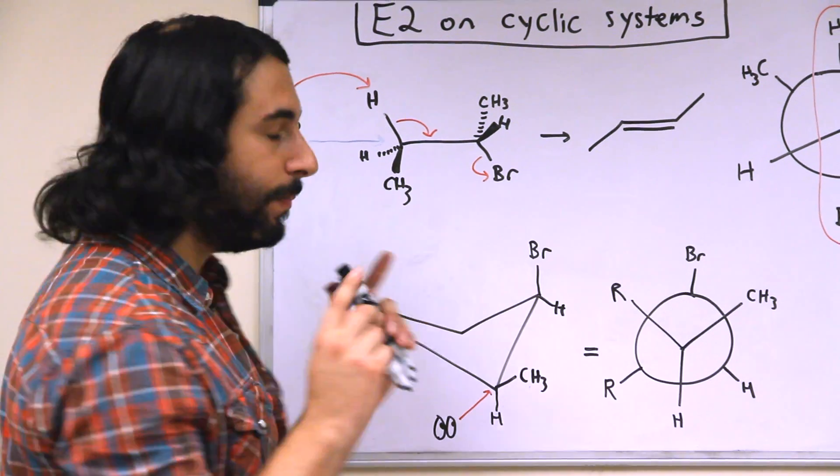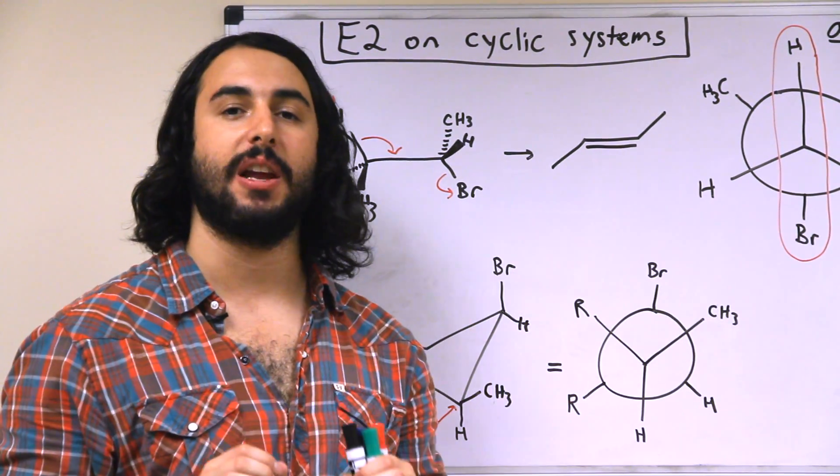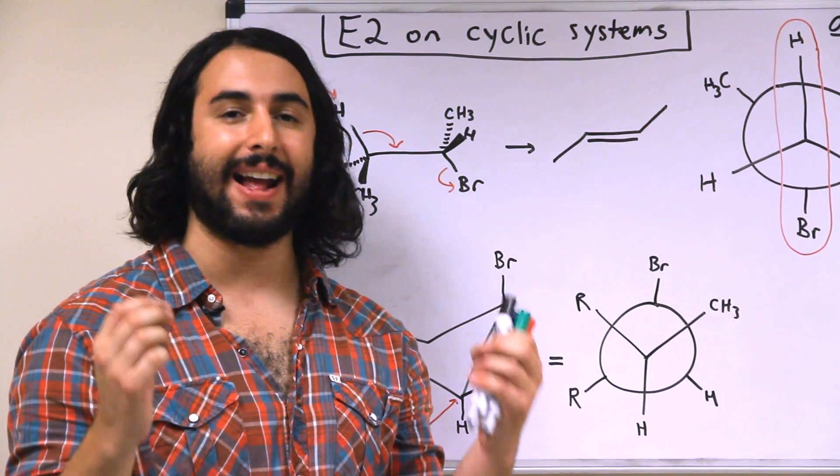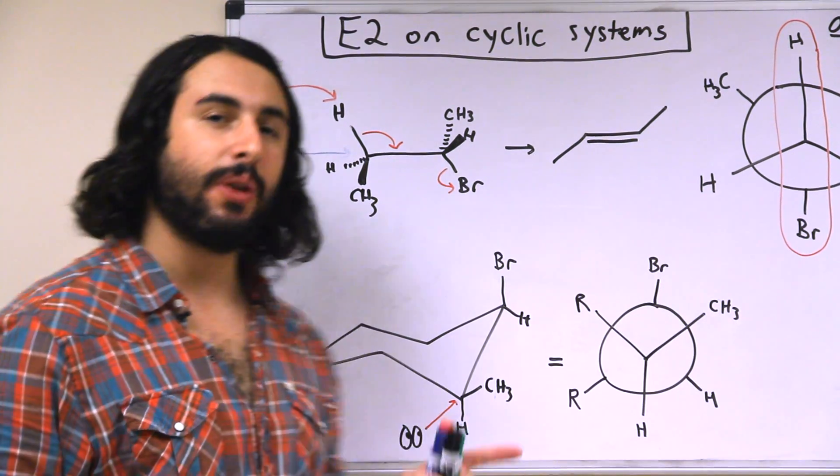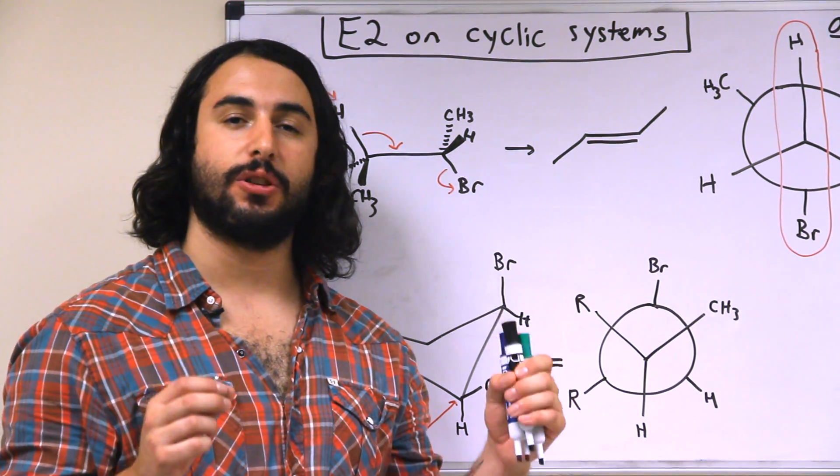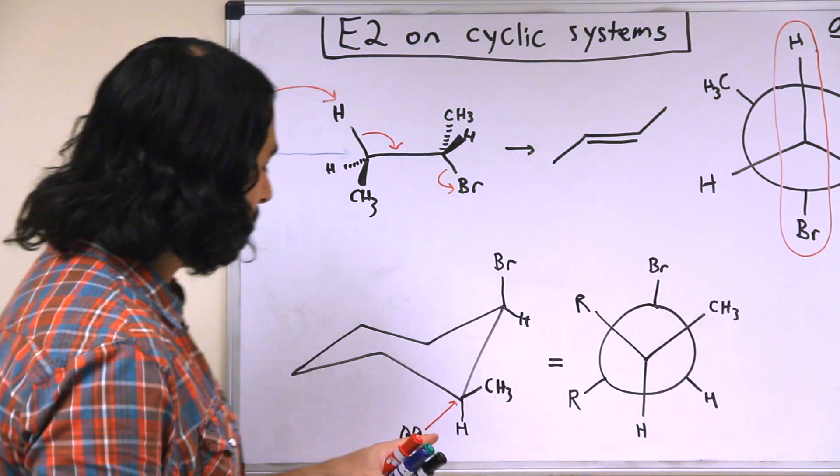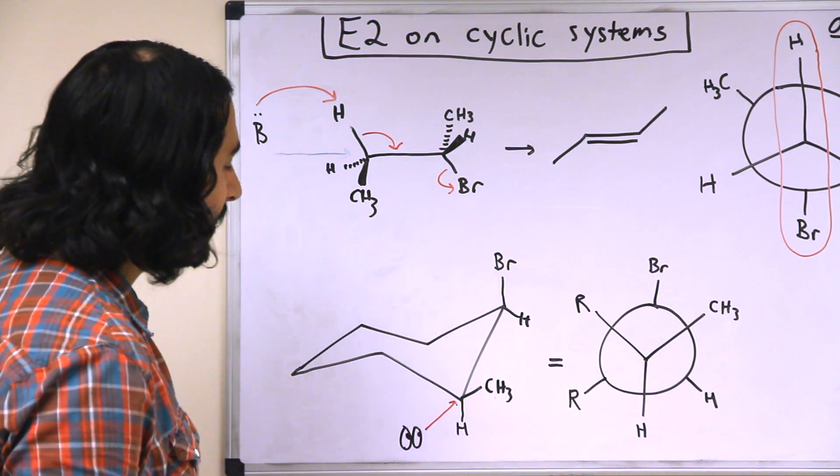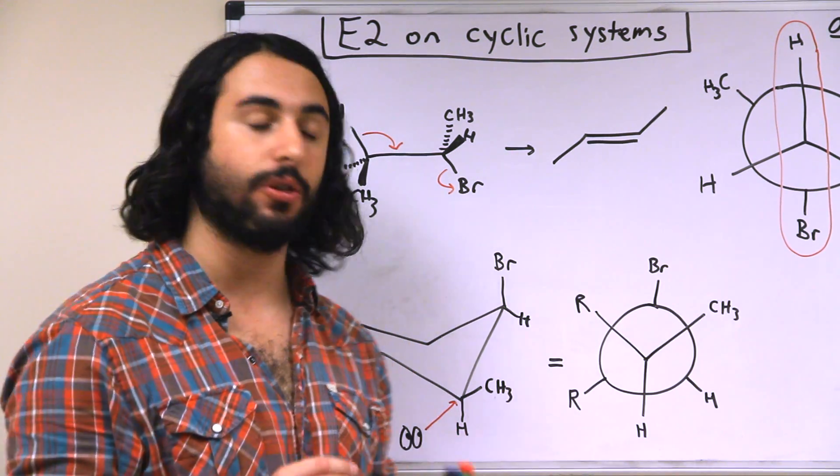Now, in order for elimination to occur, the proton being extracted and the leaving group must be in anti-conformation with respect to one another, and on a ring, the only way for this to occur is if the two groups are both axial. So the bromine has to be axial, the proton being extracted has to be axial, because the equatorial positions are always going to be anti to the rest of the ring.